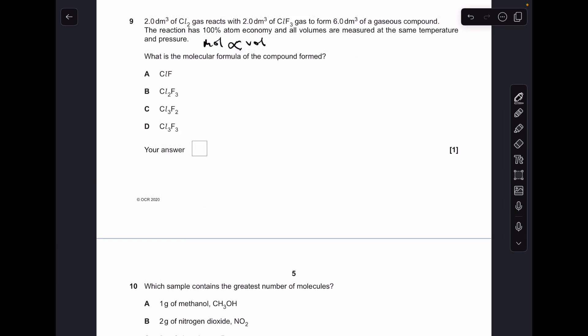Number nine: first thing I need to say is that moles are proportional to volume of gas. So if we react in the same volumes of Cl2 and ClF3, they're reacting in a one-to-one ratio. If we move on to this gaseous compound, there's six decimeters cubed being produced, so that's three times as many, so it's going to have a three in front of its formula. The other thing we need to factor in is that this has a 100% atom economy, so this is an addition reaction - there's only one product. So we've only got three chlorine atoms and three fluorine atoms to play with, so it must be ClF.